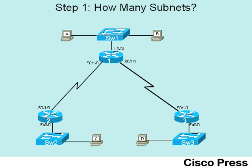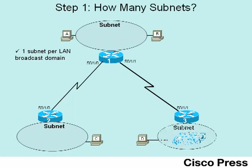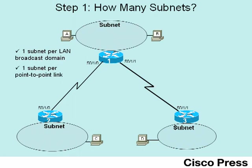We'll use two rules to discover that we need five total subnets to support this topology. The first rule is that each LAN broadcast domain, or each VLAN if you prefer, should use a single subnet. So we have one broadcast domain supported by switch one, a second supported by router two and switch two, and a third off the switch connected to router R3. Each of those broadcast domains at layer two needs a layer three subnet. The second rule is that each point-to-point serial link also needs a subnet — so two point-to-point links means two additional subnets.